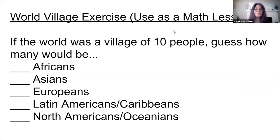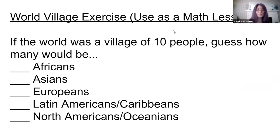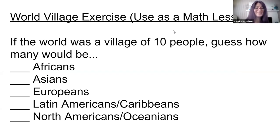Here's an exercise called the World Village Exercise. This would make a great math lesson, but you could use it in social studies or any class as well. If the world was a village of 10 people, guess how many would be Africans, Asians, Europeans, Latin American/Caribbeans, North Americans, and Oceanians. So if the world was just 10 people, there would be one African, six Asians, one European, one Latin American/Caribbean, and one North American/Oceanian. For my kids, they were shocked to realize that white people were a minority — based on what we see when we Google online, when we watch TV, when we basically interact anywhere in our world, it's very white-male-dominated.